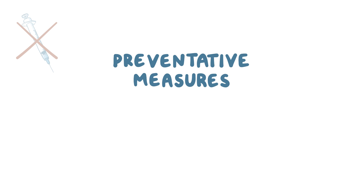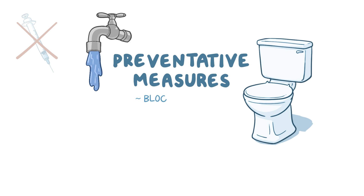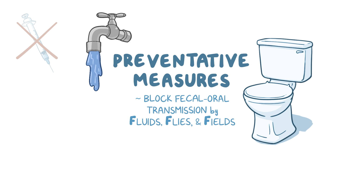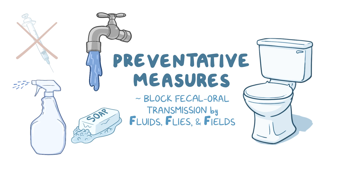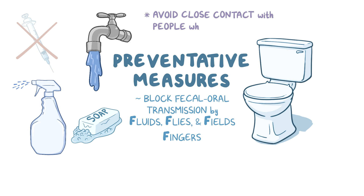There is currently no vaccine for norovirus, but preventative measures include proper water and sanitation facilities, which block fecal-oral transmission by fluids, flies, and fields — three of the four Fs. Handwashing with antiseptic soap and water, and sanitizing surfaces that would have come into contact with stool, can prevent transmission by fingers. It is also recommended to avoid close contact with people who have symptoms.